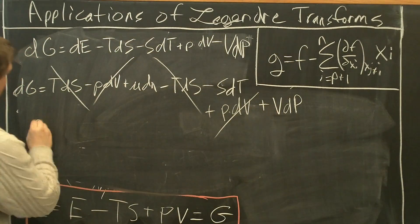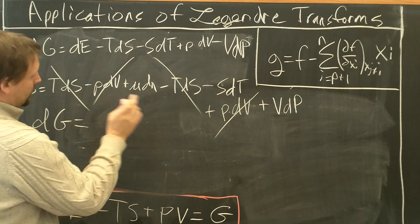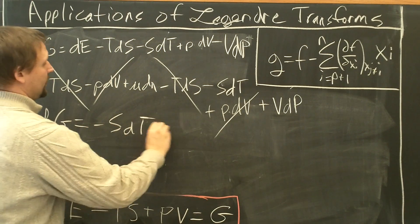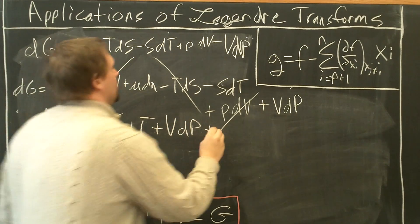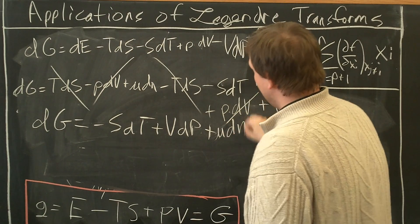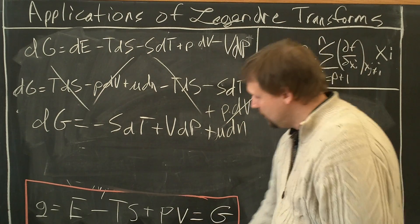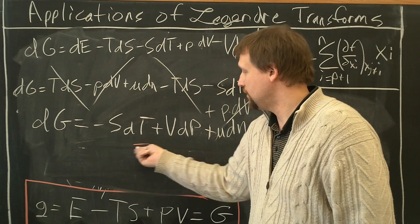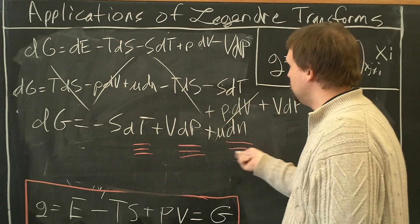So what we're left with is dG equals minus S dT plus V dP plus μ dN. That's it. This is the Gibbs free energy. And what is it a natural function of? Temperature, pressure, and mole number.